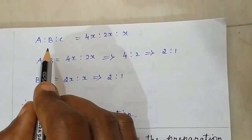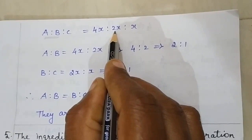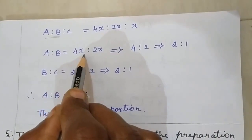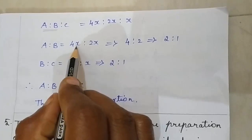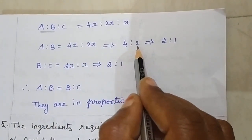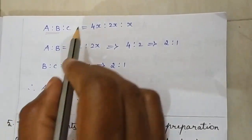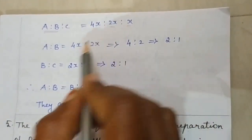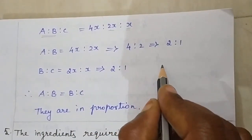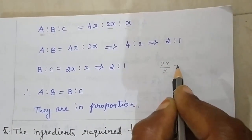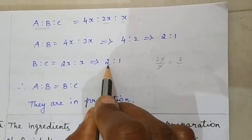Now we have to find the ratio A is to B. A value is 4X and B value is 2X, so A is to B is equal to 4X is to 2X. Cancelling X, we get 4 is to 2, which simplifies to 2 is to 1. Next, B is to C: B value is 2X and C value is X, so B is to C is equal to 2X is to X, which gives 2 is to 1.